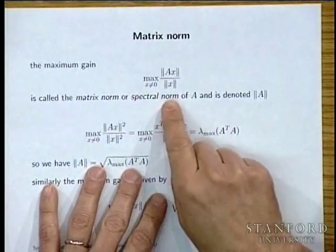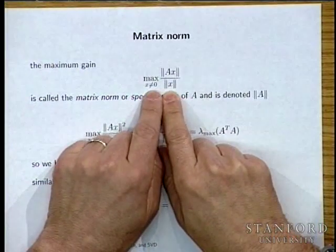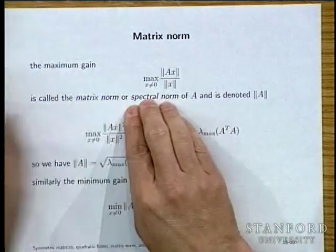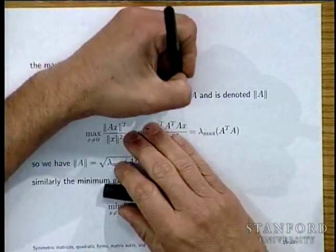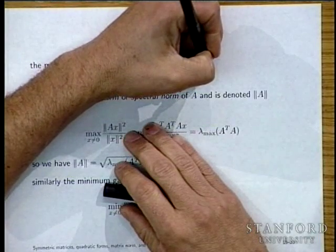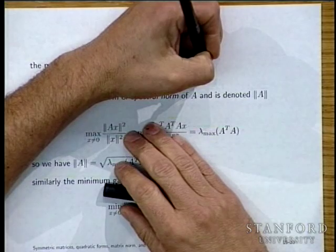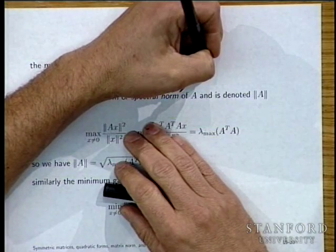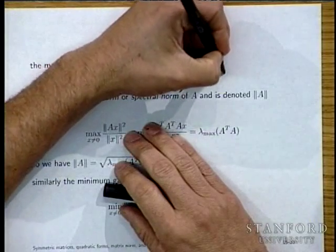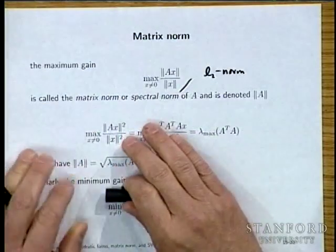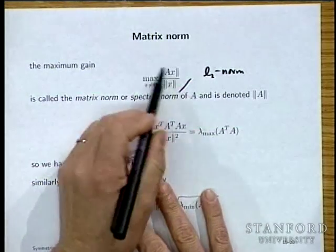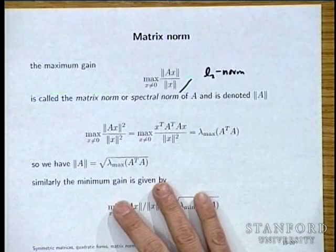The maximum gain of a matrix is called the matrix norm, spectral norm, or L2 norm. We overload the norm symbol for matrices. When overloading, you must check that in ambiguous contexts the two meanings coincide. For a column vector (n by 1 matrix), the matrix norm reduces to the ordinary vector norm — the square root of the sum of squares.